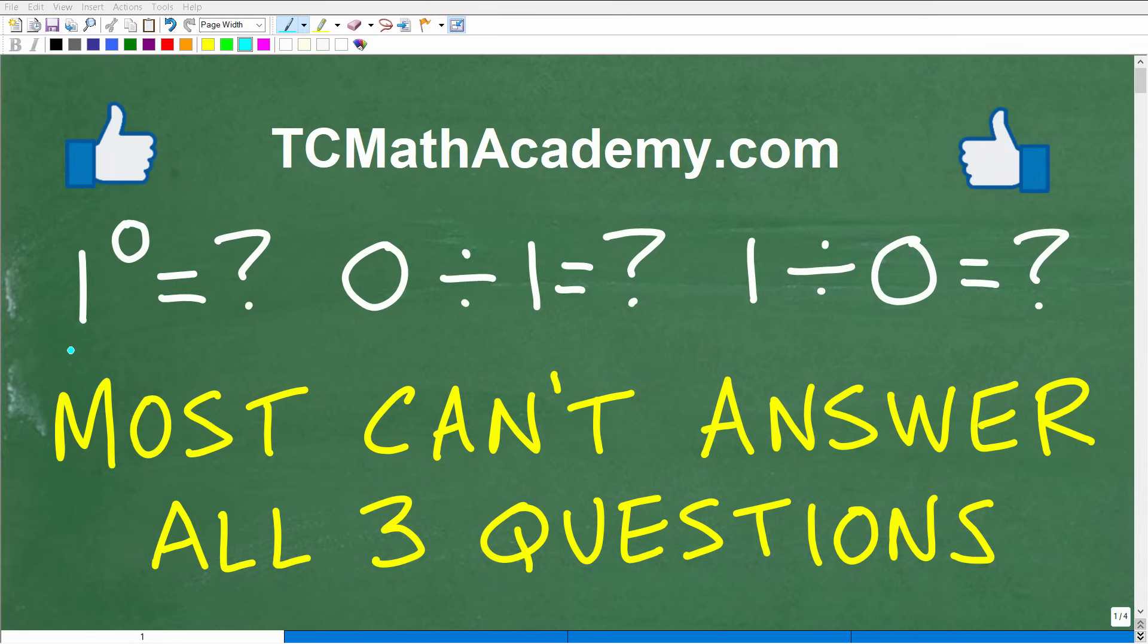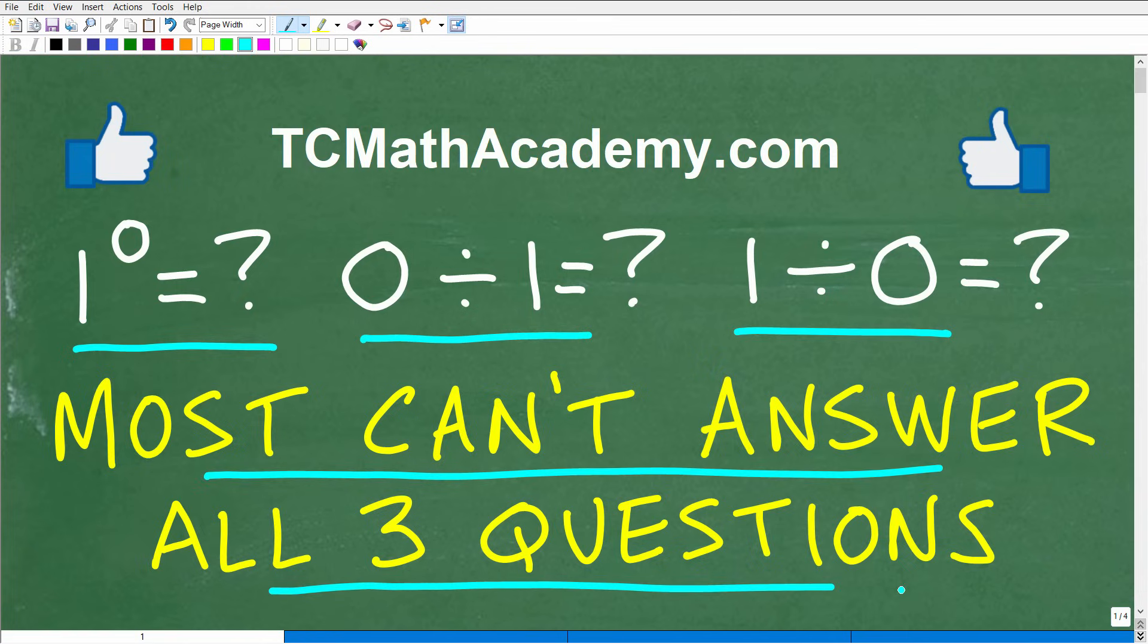The first question is 1 to the zero power. What does that equal to? Our next question is zero divided by one. And then our last question here is one divided by zero. So again, put that calculator away. Just use that supercomputer in between your ears.